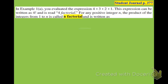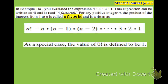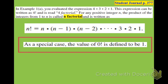Here's what it technically looks like. Write this down as a special case: the value of 0 factorial is 1. It's one of those things in math — I can't necessarily explain it to you, it's just a rule.